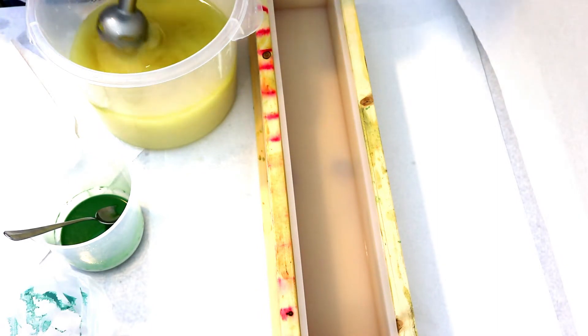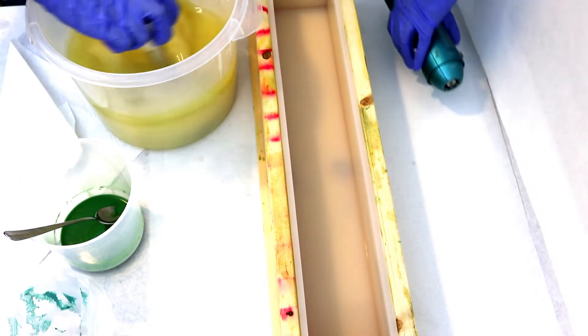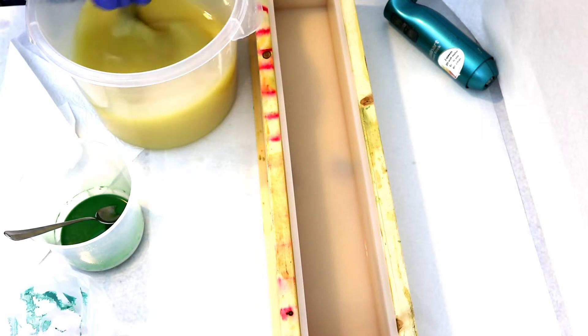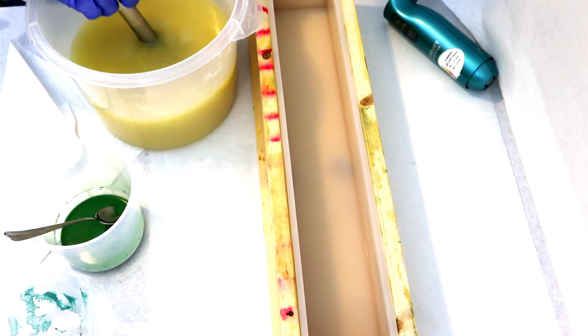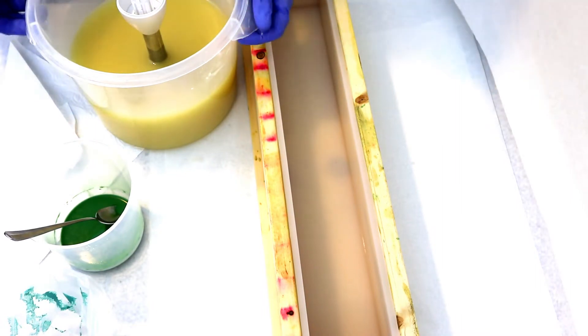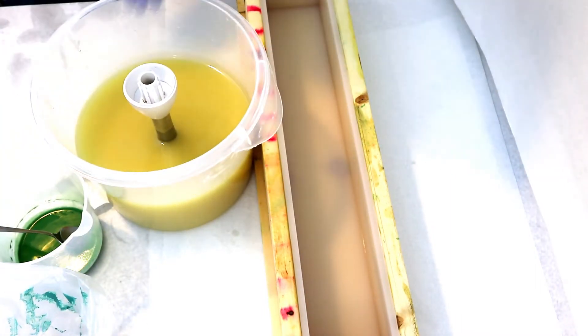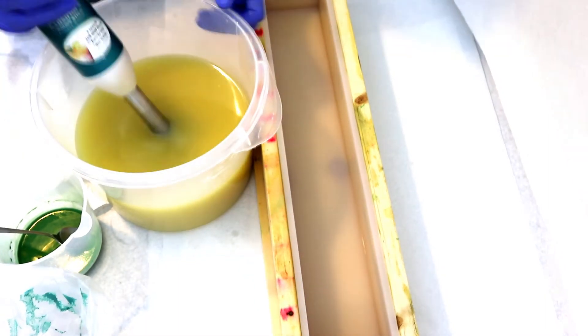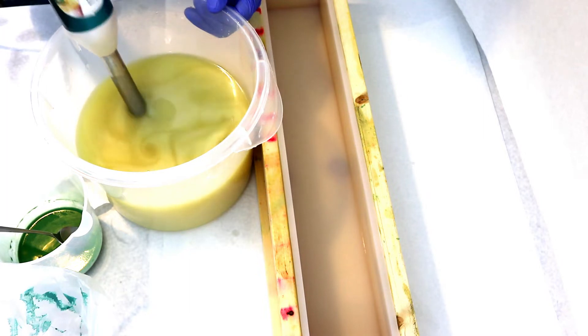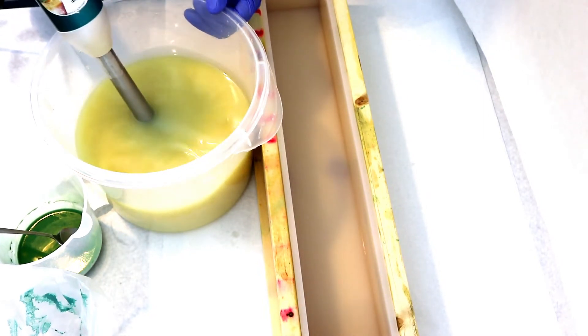This soap is a coconut milk soap - it has coconut oil and coconut milk in it. I'm mixing that into the oils now. I like to use dry coconut milk because it gives me more control over the liquid in my soap batter, and I have more control over how much fat goes into the soap batch because when the coconut milk is dry, the fat's evenly distributed.